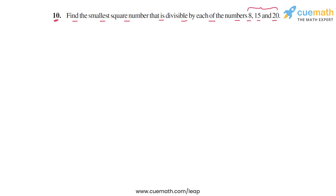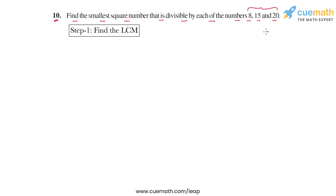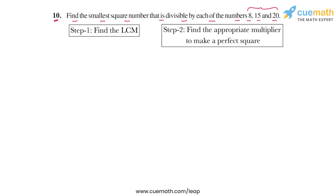Just like in that question, we will solve this question in two steps. In the first step, we will find the LCM of 8, 15, and 20, because we want the end result to be divisible by each of these three numbers. The LCM itself may not be a perfect square, so in step two we will find a multiplier to multiply that LCM to get a perfect square, and the resulting number will be our answer.